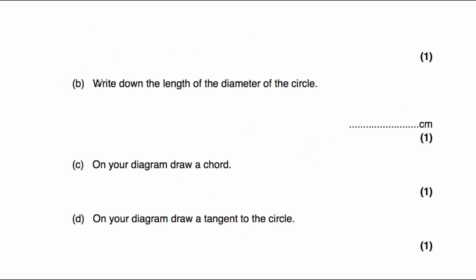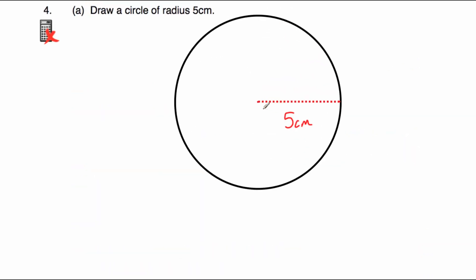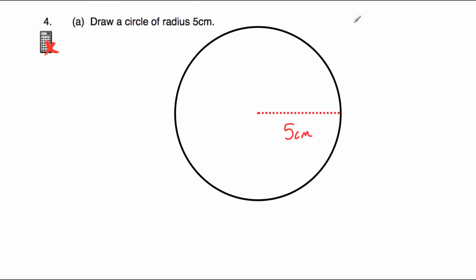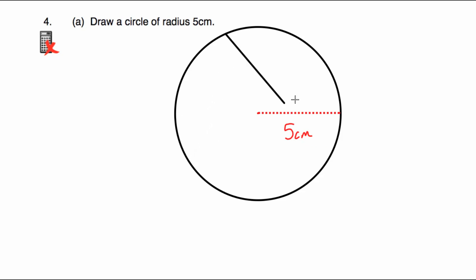Part B says write down the length of the diameter of the circle. The diameter is twice the radius — it goes the whole way across. We have a radius of 5 on each side, so the diameter is 10cm. Part C asks us to draw a chord. We draw a line joining one point on the circle to another point on the circle — it could go in any direction. There's our chord, and we label it chord.